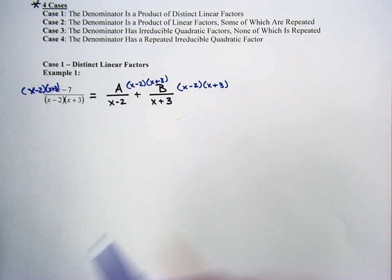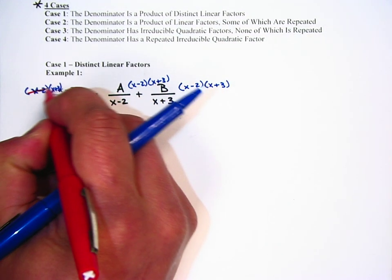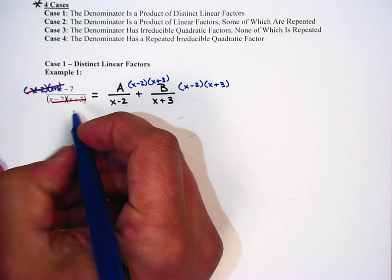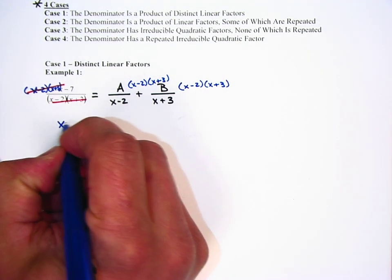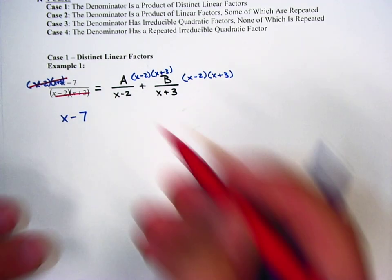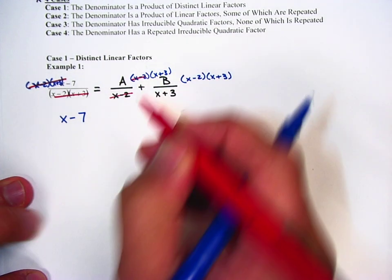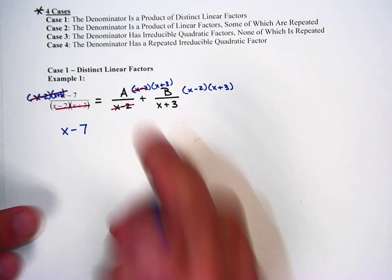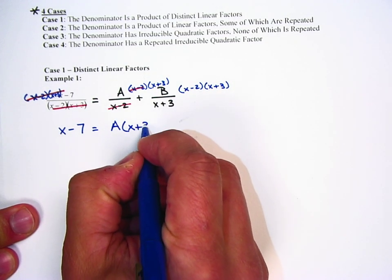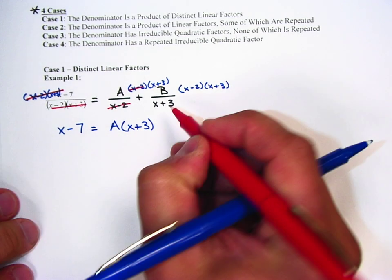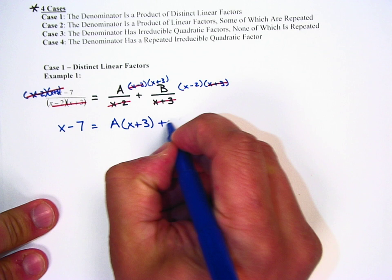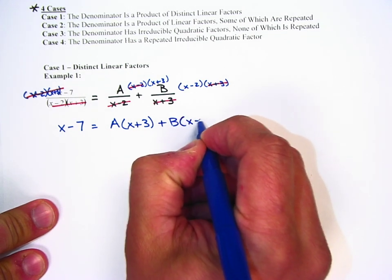Now why do we do that? Well, if I multiply the left term by it, the entire denominator cancels out, and I am just left with x minus 7. Okay, over here on the right, the x minus 2s cancel, and I'm left with A times x plus 3. The x plus 3s cancel when I multiply that second term, and I'm left with B times x minus 2.